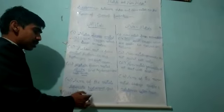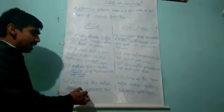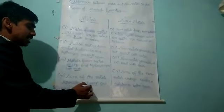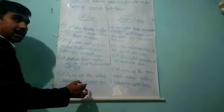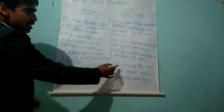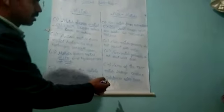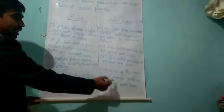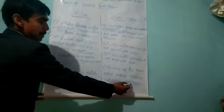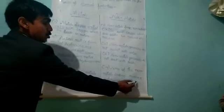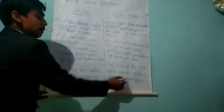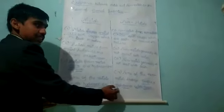Some metals liberate hydrogen gas with base. When some metals react with base, they form salt and release hydrogen gas. But some nonmetals react with base to form complex substances.